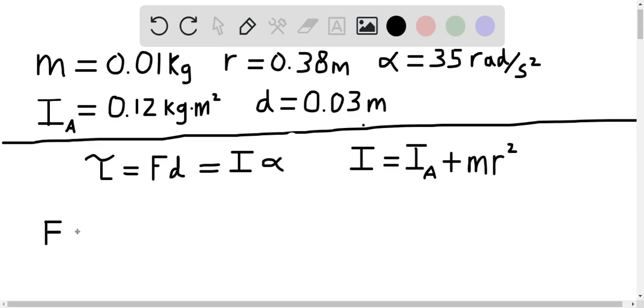F equals I alpha over d, where I equals I sub a plus mr squared.